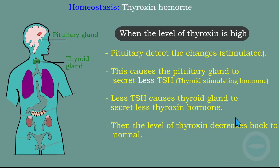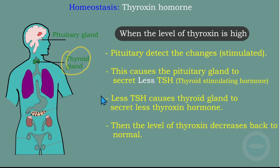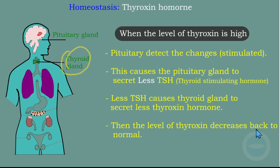Now let's look at the scenario where the level of thyroxine is high. If the level of thyroxine is high, the pituitary gland will detect the changes and get stimulated. This causes the pituitary gland to secrete less TSH. The reduced TSH causes the thyroid gland to secrete less thyroxine, and then the level of thyroxine decreases back to normal — it will no longer be high, it will be normal.